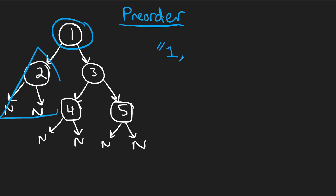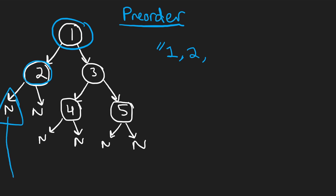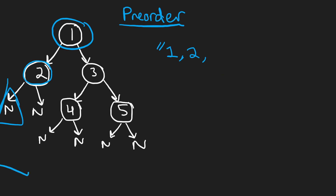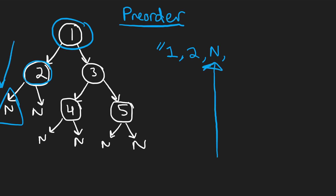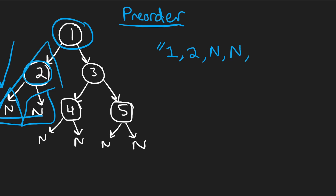Let's recursively do the same for the left subtree. We have a two — add that. Now let's do the left and right subtree of two. First the left subtree: we see null. It's empty, but we are going to add that to our string to indicate that this left portion cannot be continued. We'll use a capital N for an empty node. Since we finished the left subtree and know it was null, that's our base case. The right subtree of two is also null, so we add another N.